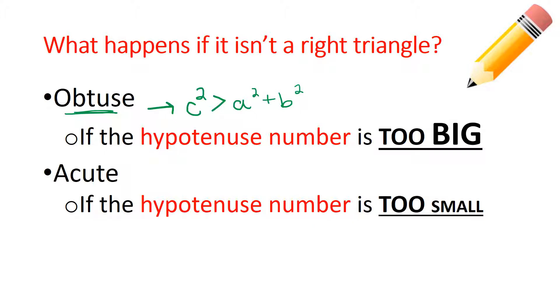That's saying that hypotenuse number, when I square that hypotenuse number, that biggest number, remember C is my longest side. When I square that C, it has to be bigger than the other two sides added together and squared.